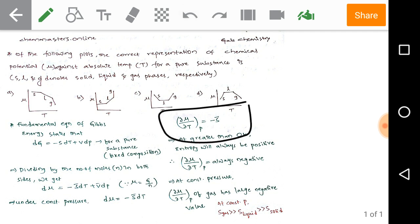From that we get partial derivation as dou mu by dou T at constant pressure P equals to minus s bar. Here s indicates entropy. We know that at greater than 0 Kelvin